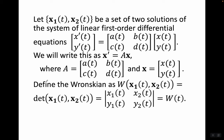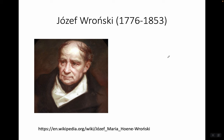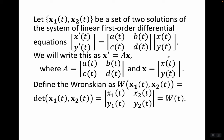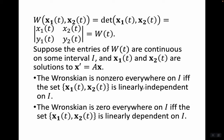Let x1(t), x2(t) be a set of two solutions of the system of linear first-order differential equations x'(t), y'(t) = [a(t) b(t); c(t) d(t)] · (x(t), y(t)). We write this as x' = Ax. Define the Wronskian — named after the great Polish mathematician Josef Wronski — as W(x1(t), x2(t)), which is the determinant of the matrix with columns x1(t) and x2(t): that is, [x1(t), x2(t); y1(t), y2(t)]. We call that W(t).